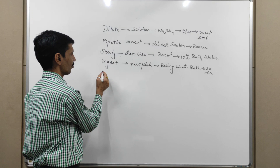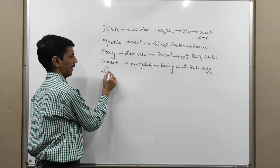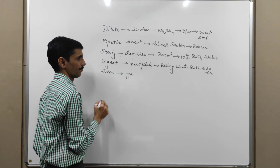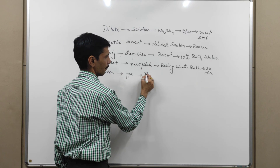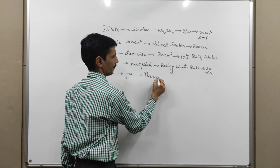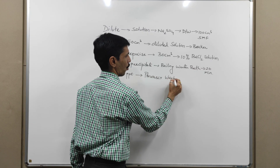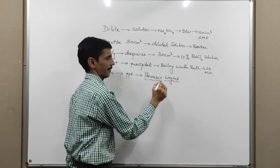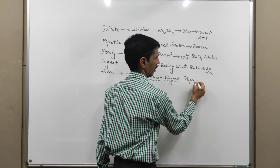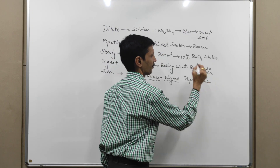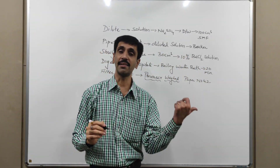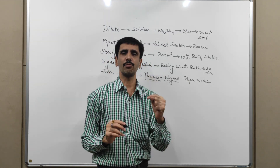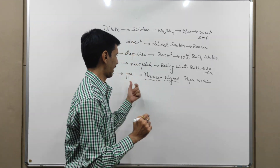We are interested in the precipitate, so we need to filter it through a previously weighed Whatman paper number 42. Please be very careful — it is a previously weighed Whatman paper, because the entire analysis is based on weight. The selection depends upon the pore size and the particle size of the precipitate.